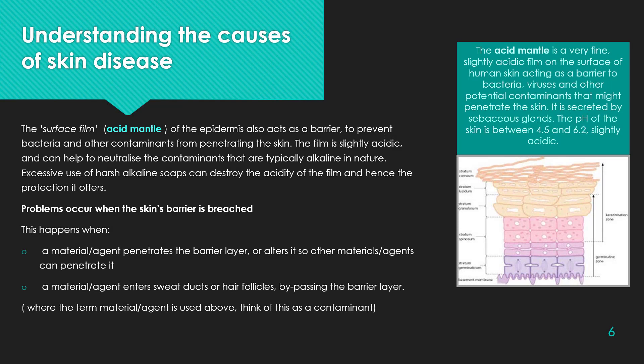The surface film — the acid mantle — of the epidermis also acts as a barrier to prevent bacteria and other contaminants from penetrating the skin. The film is slightly acidic and can help to neutralize contaminants that are typically alkaline in nature. Excessive use of harsh alkaline soaps can destroy the acidity of the film and hence the protection it offers. Problems occur when the skin's barrier is breached — when a material or agent penetrates the barrier layer or alters it so other materials can penetrate it, or when a material or agent enters sweat ducts or hair follicles, bypassing the barrier layer.